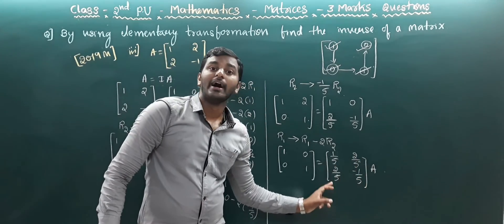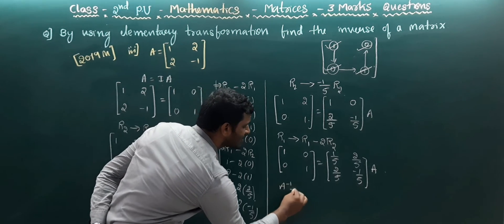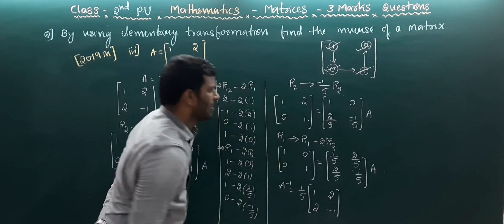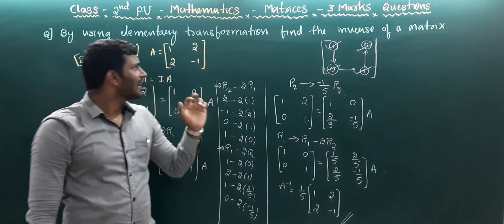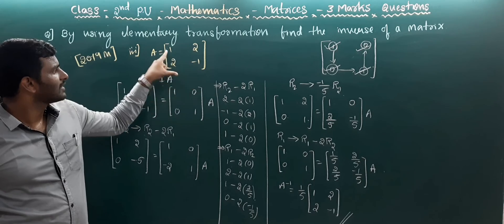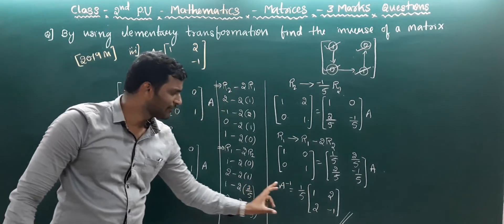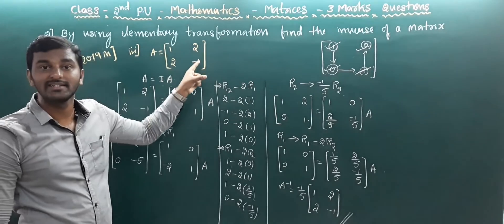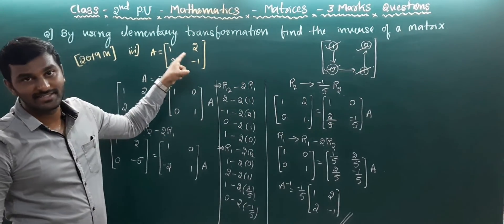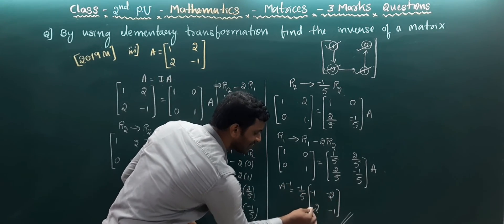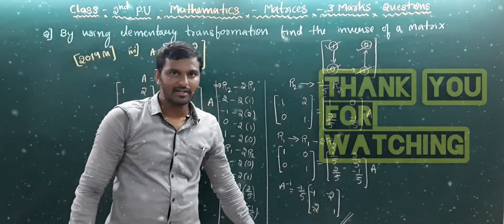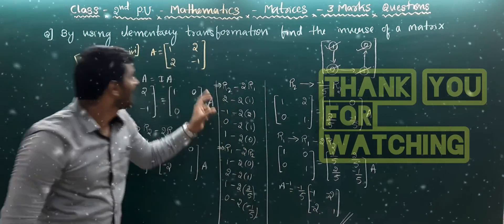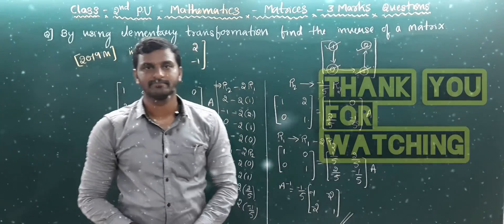Taking 1/5 as common from each element, A inverse equals (1/5) × [1, 2; 2, -1]. We can also verify the answer: for matrix [1, 2; 2, -1], interchange the diagonal elements, and the determinant is -5. Taking -1/5 as the scalar factor with appropriate sign changes gives the same final answer. Thank you.